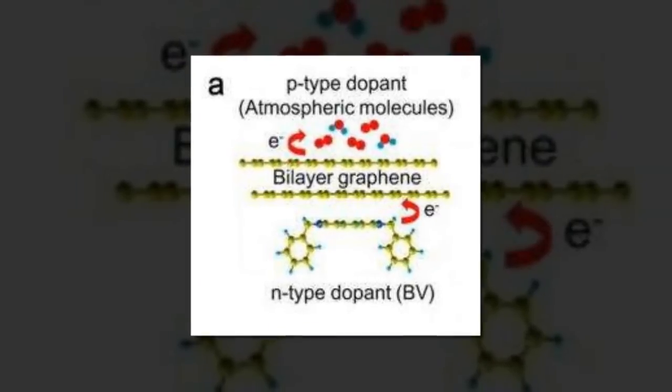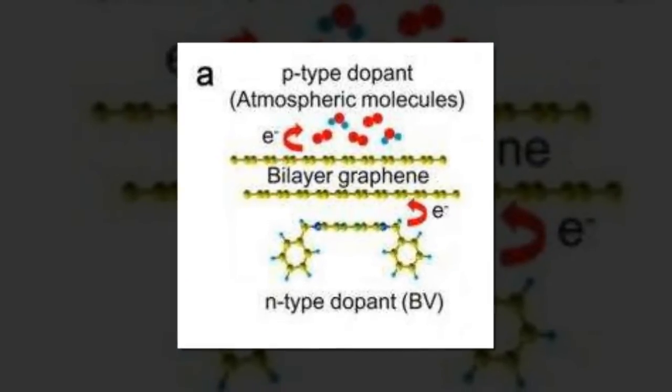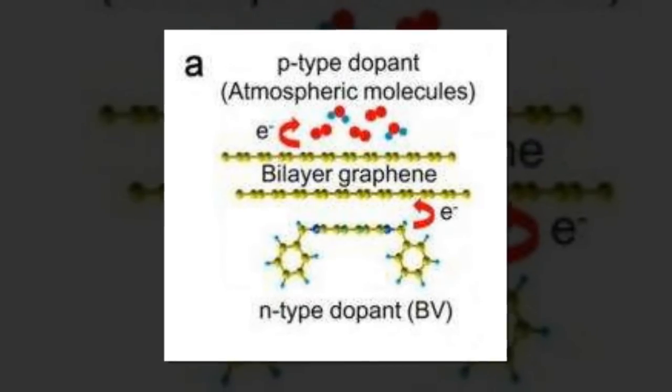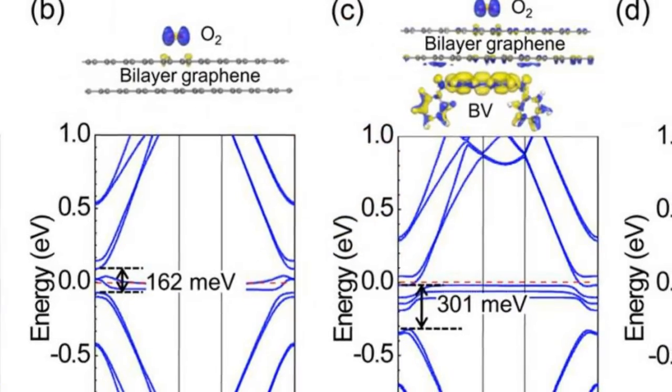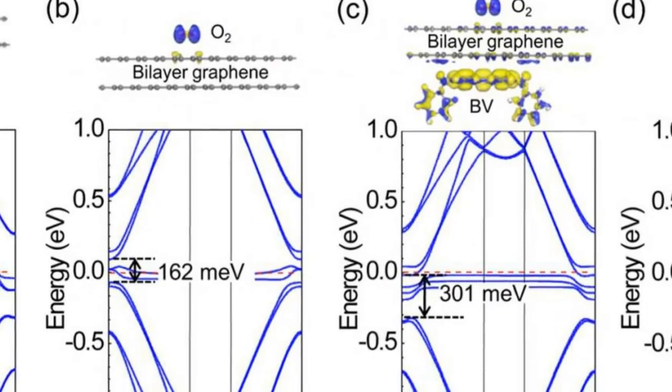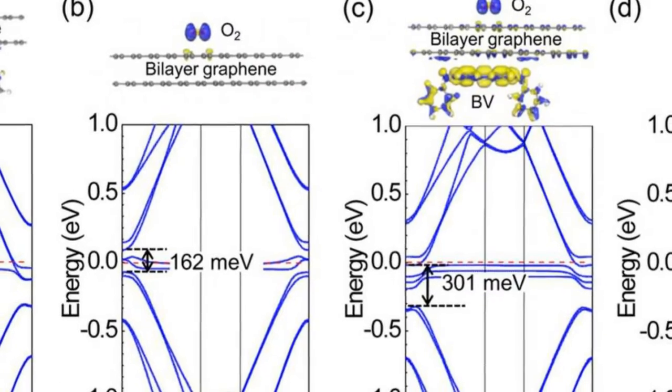Electrons can move through graphene with almost no resistance, a property that gives graphene great potential for replacing silicon in next generation, highly efficient electronic devices.